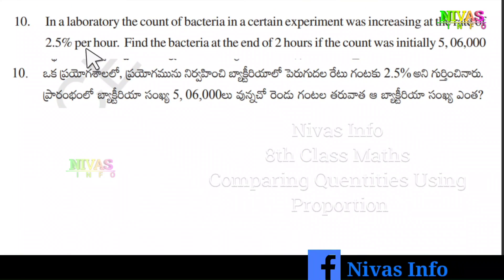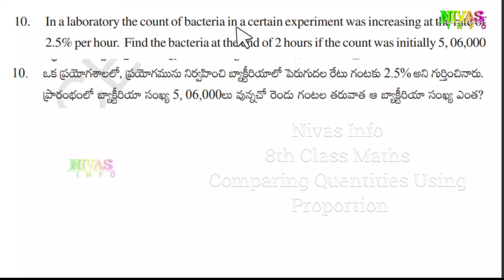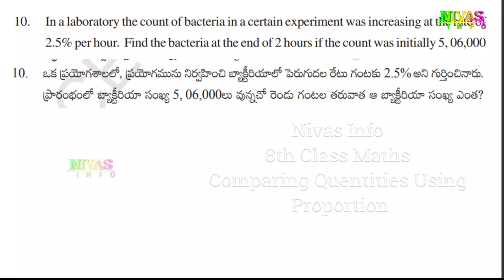Question number 10. In a laboratory, the count of bacteria in a certain experiment was increasing at the rate of 2.5% per hour. Find the bacteria count at the end of 2 hours, if the count was initially 5,60,000.